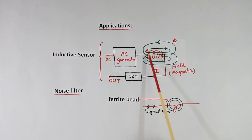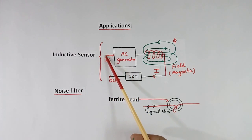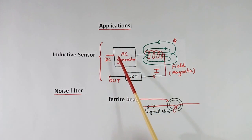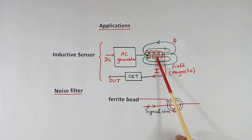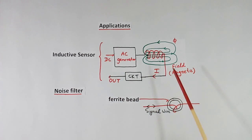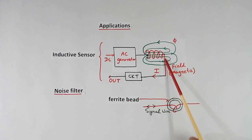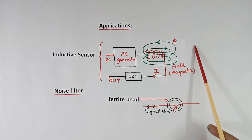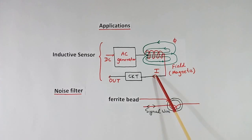One more application of an inductor is an inductive sensor. There is an oscillator — AC generator — whose output goes to the inductor, and some current flows. There will be a current sensor here. Because current is flowing, there will be a magnetic field. Now when something comes nearby, there will be a change in the magnetic field. Because of this change in magnetic field, this current will change, and this change in current can be sensed by the circuit.